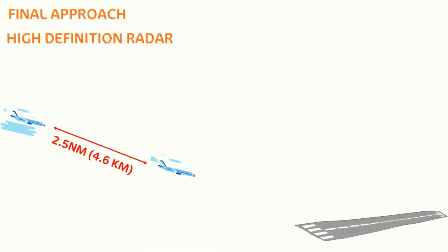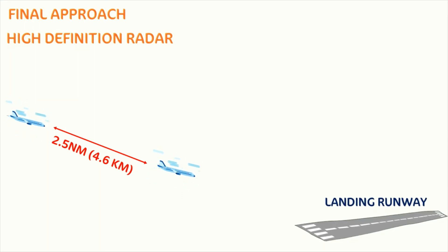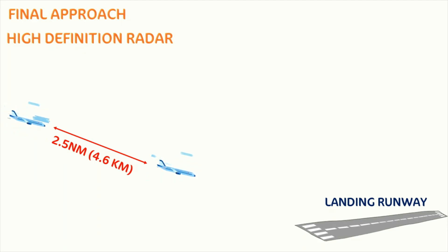In other words, if two aircraft are one behind the other and are aligned to the landing runway for landing, and if the airport is equipped with high definition radar, then the minimum radar separation is reduced to 2.5 nautical miles or 4.6 kilometers.